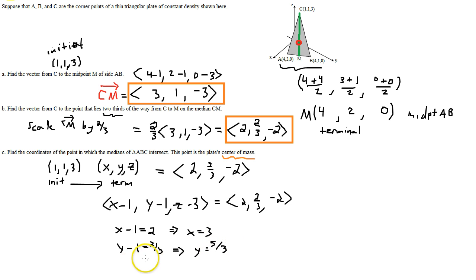And then finally, z minus 3 is negative 2. So, 3 plus negative 2. We go ahead and add that 3 over and then z must then be a positive 1. So, that point is 3, 5 thirds and 1. It's the center of mass for your triangle. It's where the medians all intersect.